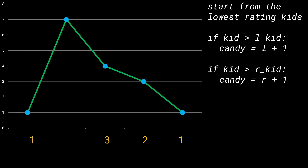Finally, we move on to the kid with the highest rating of 7. It looks at the left kid with 1 candy and the right kid with 3 candies, and realizes it's greater than both. So it gets 4 candies — the maximum of its neighbors plus 1 — which satisfies both conditions.